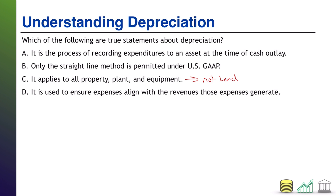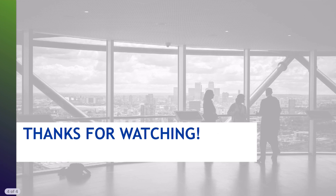Finally, D: it is used to ensure expenses align with the revenues those expenses generate. That is our one and only correct answer out of these options. Basically, over time you're going to use your fixed assets to generate the revenue of your company, whatever that revenue comes from. And over that same time, you will expense the use of the asset. Therefore, the expenses will get aligned with the revenues being generated. That's it for practice problem PP&E 01. I hope you found it helpful. Thanks for watching and join me for another video.